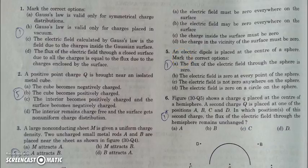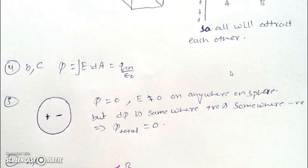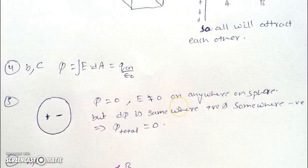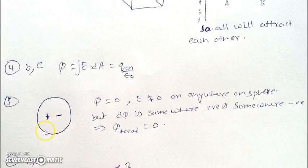In question number 5, there is an electric dipole which is placed at the center of a sphere. If a dipole is placed, then both the charges will be inside. And as the enclosed charge is zero, the flux will be zero but the field will not be zero at any point on the sphere. The total charge is zero so the total flux will be zero. The field will create a positive flux at some places and negative flux at other places, so the total flux added together will give you zero, whereas the flux through individual portions may be positive or negative.